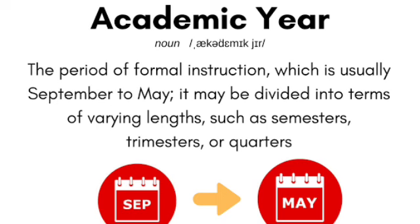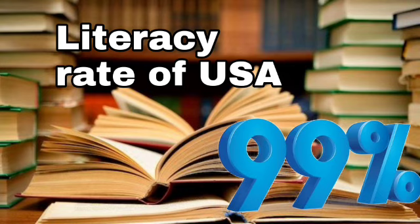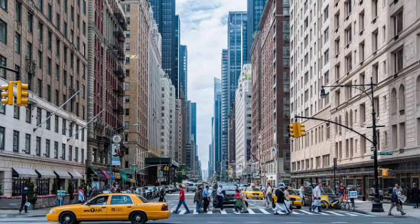Fifth point: the academic year in America runs from September to May or June, and the year is divided into semesters. Sixth point: the literacy rate in America is very high — about 99%.